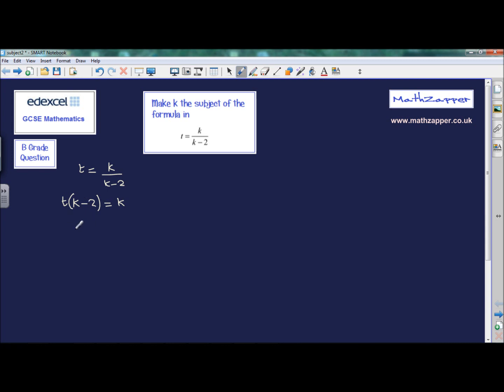Now I'm going to expand brackets, so t multiplied by k is kt. t multiplied by minus 2 is minus 2t, and that still equals k.